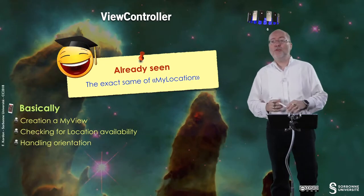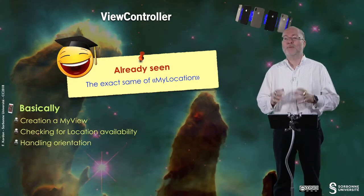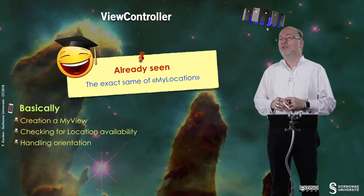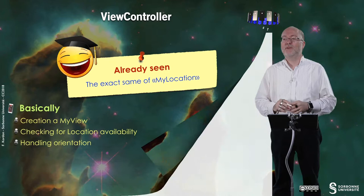I will not present you the view controller because in fact you already seen it. It's the exact same view controller of the my location example that was presented in a previous video. Basically you create a my view. Basically you check for location availability. You do it in a view did appear at that moment. You remember the trick and the trap and also it handles orientation. But no waste of time. It's very simple.